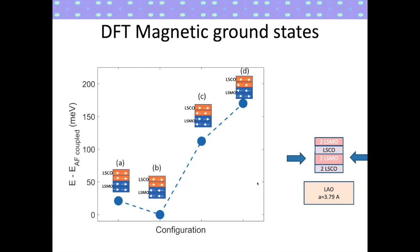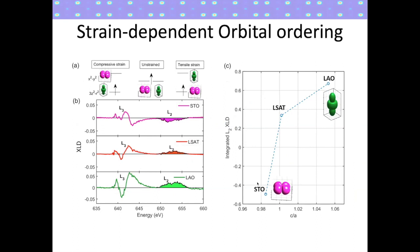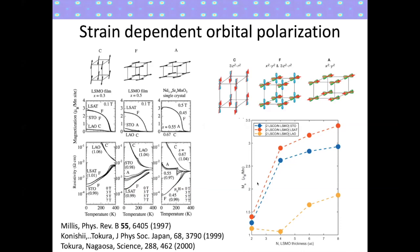We'd like to find ways to dynamically switch between these two states to change the magnetization in the system. We can also do measurements to determine the orbital polarization, and we see a progression from x²−y² orbital ordering on STO to 3z²−r² orbital ordering on LAO. We can correlate the reduction in moment with the spin ordering and orbital ordering: for LAO with compressive strain, we expect antiferromagnetic interactions in the plane of the film, which explains the reduced magnetization for films grown on LAO.